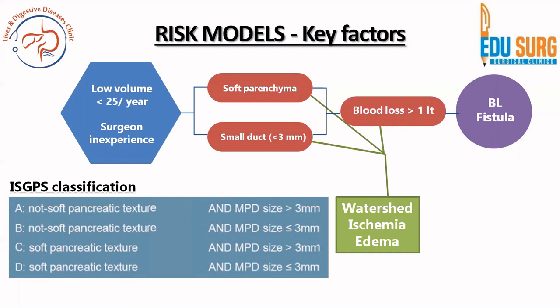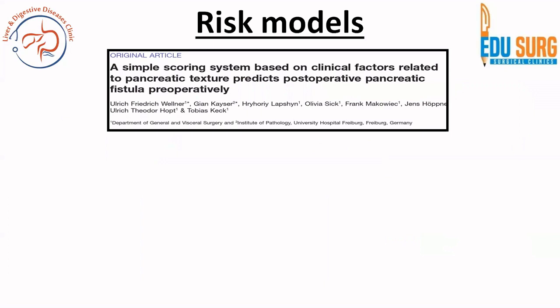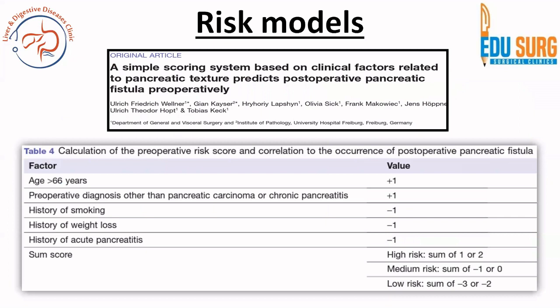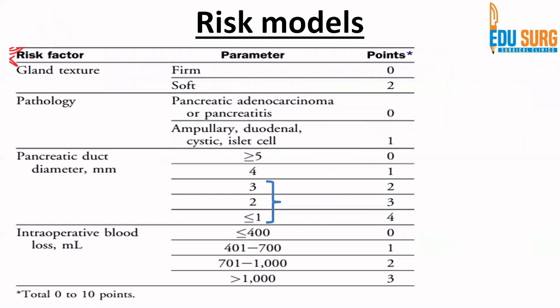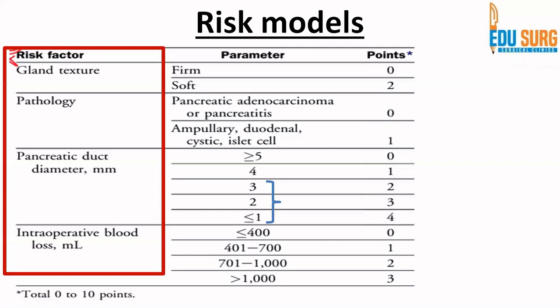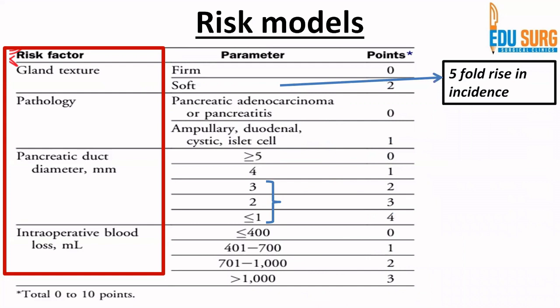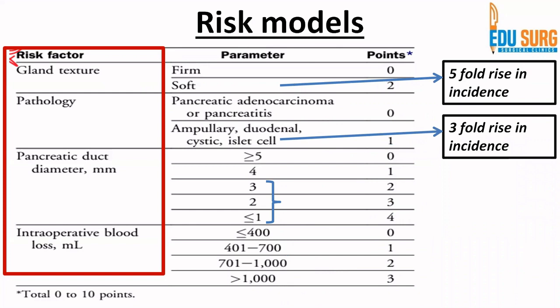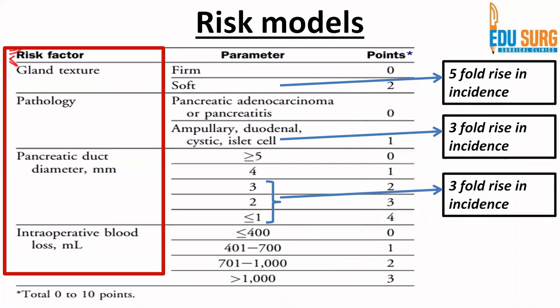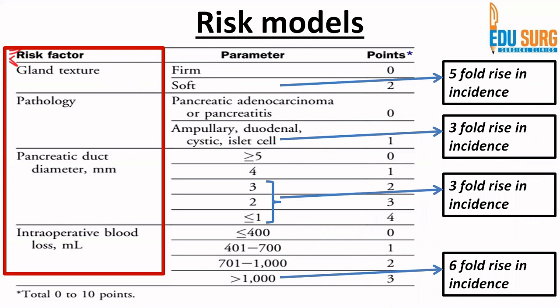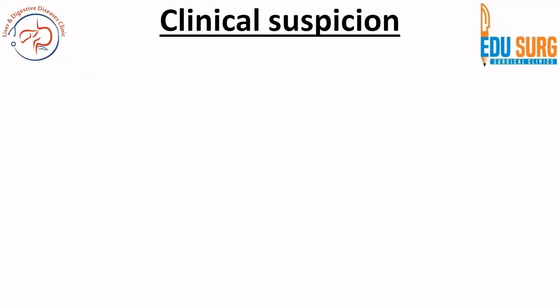The latest ISGPS classification highlights soft pancreatic parenchyma and small duct less than 3 mm as key points. Various risk models consistently identify soft parenchyma, small duct, blood loss, and surgeon inexperience. One risk model shows soft pancreatic parenchyma causes a 5-fold rise in incidence, pathology leads to a 3-fold rise, pancreatic duct diameter less than 3 mm leads to a 3-fold rise, and blood loss more than 1000 mL leads to a 6-fold rise in incidence.